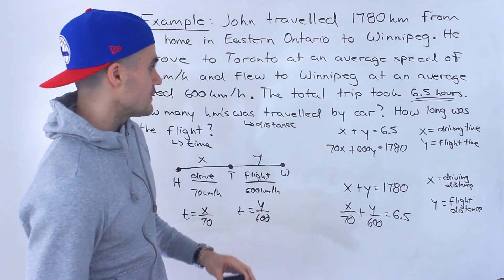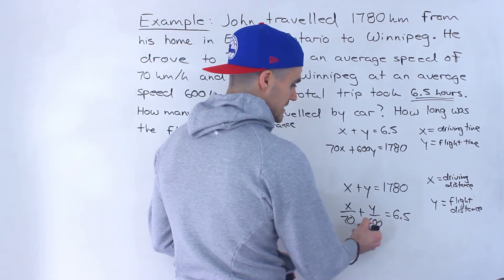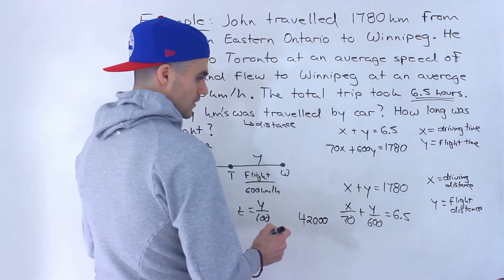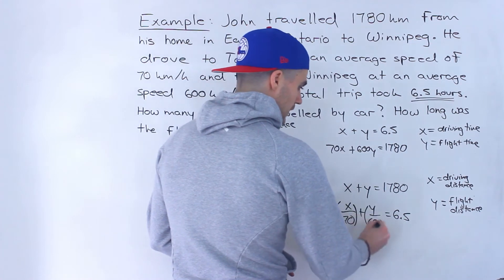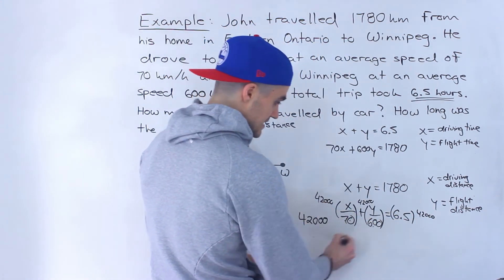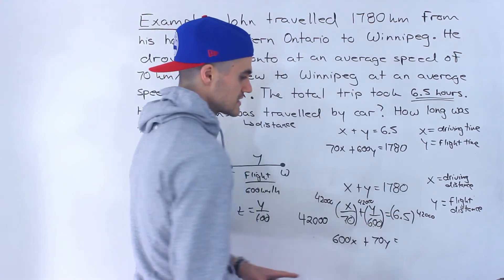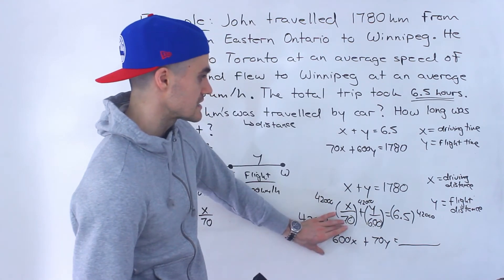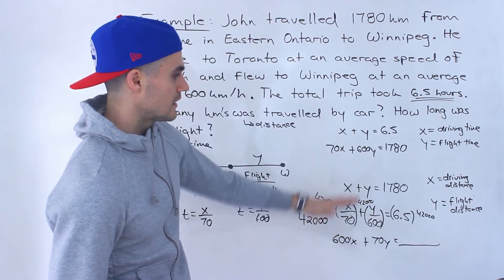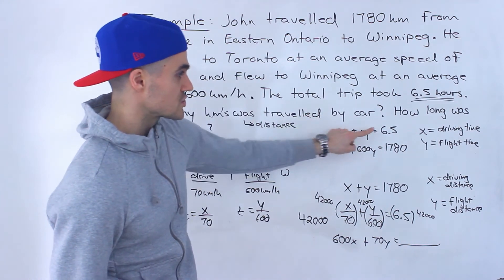Out of the two methods, I'm going to work with the time-variable system because the distance-variable system has fractions. To clear those fractions, you'd multiply everything by 42,000 — since 70 times 600 equals 42,000 — giving 600x plus 70y equals some value. Instead of dealing with those fractions, I'll just use the time-variable system and solve using substitution.